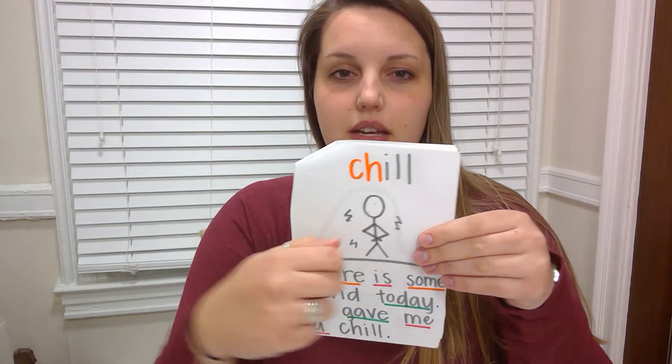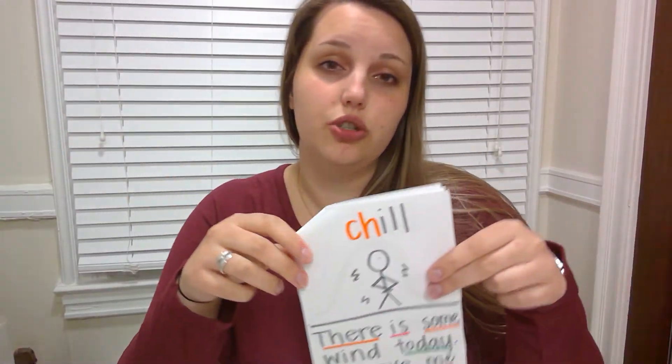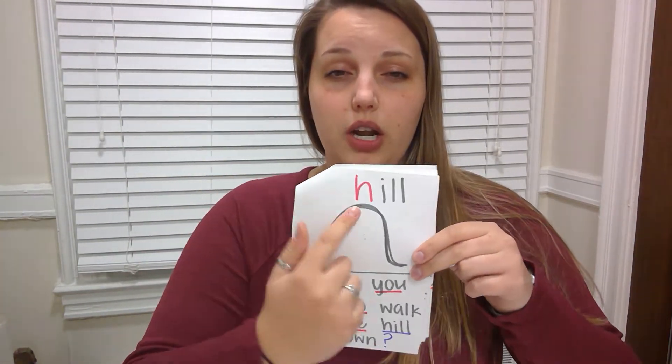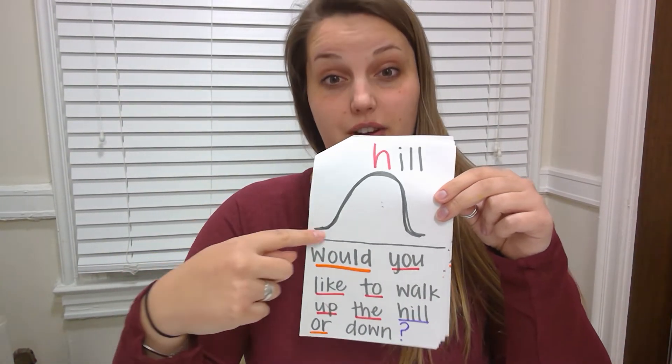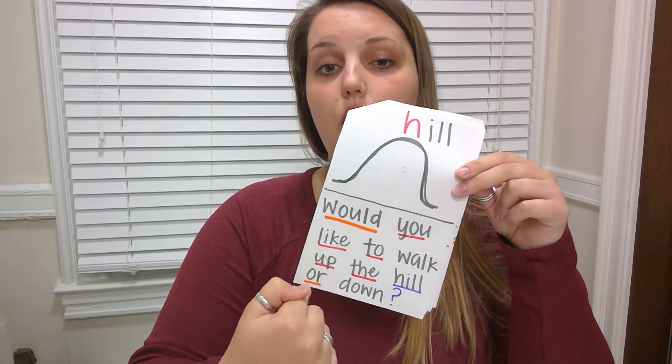Turning to our page that we did on Wednesday — it was our word that has two letters at the beginning to add to our ill family word. It's the word chill. There is some wind today; it gave me a chill. You decided what face you wanted to put on your person — maybe you added a scarf or hat. But it's chilly out. And our word we did yesterday was the word hill — my very, very steep hill. Would you like to walk up the hill or down?